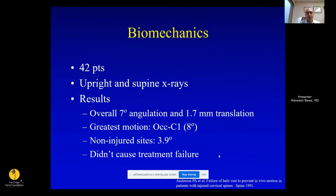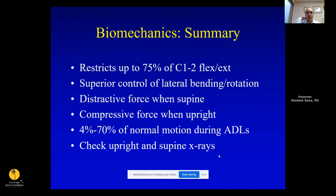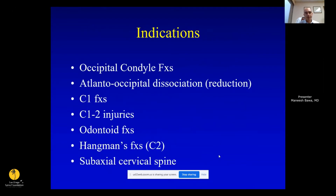The halo is very good for treating upper cervical injuries but not great for subaxial spine injuries. One study showed 1 to 2 millimeters of translation and 7 millimeters of angulation that typically did not cause treatment failure. It restricts 75 percent of C1-C2 motion, making it very good for upper cervical injuries. Most patients, once they get used to it, can perform most activities of daily living. Check upright and supine X-rays once they're in the halo to ensure there isn't excessive motion.